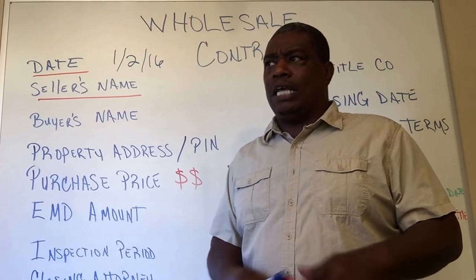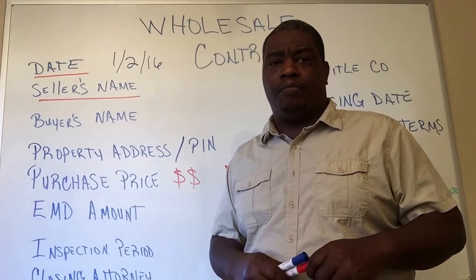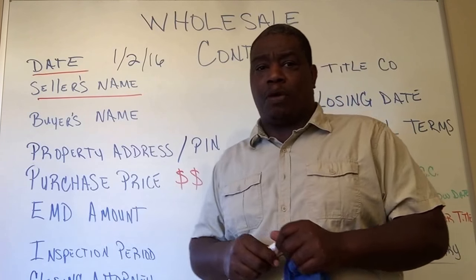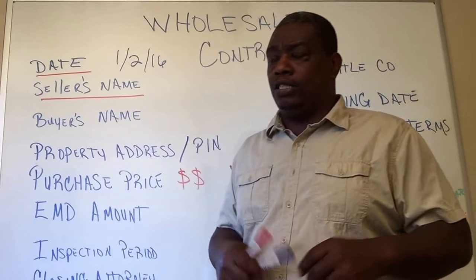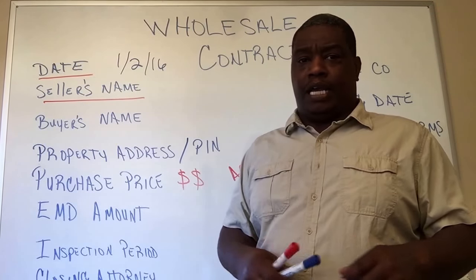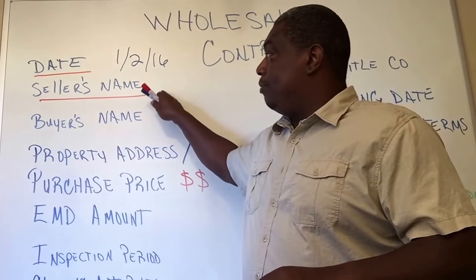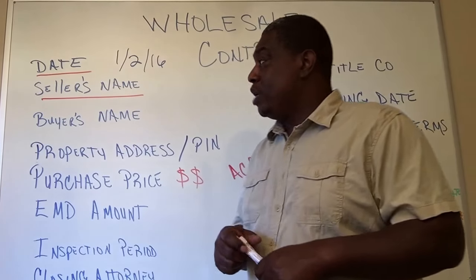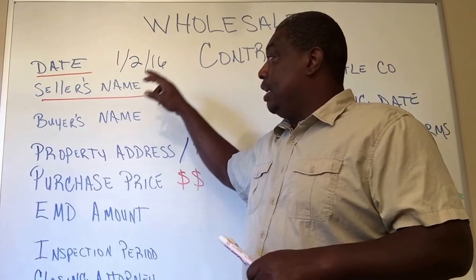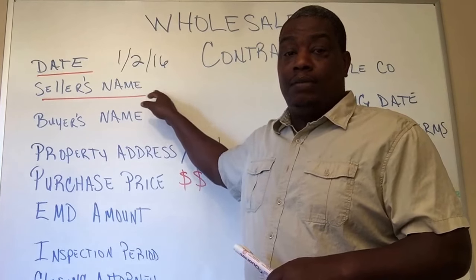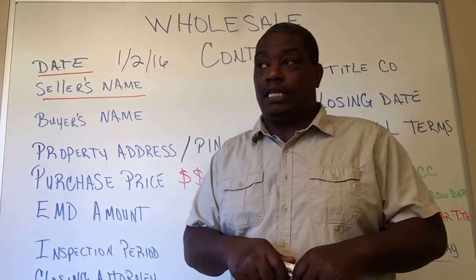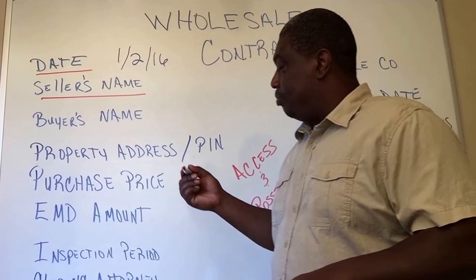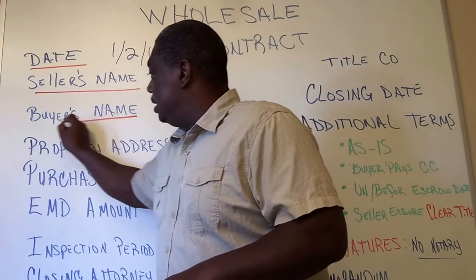For example, if you get a call from Joe Blow and he wants to sell his property, but the property on the tax record is in Joe Blow LLC, then the name on that contract needs to be Joe Blow LLC, not just Joe Blow. Remember, if it's an LLC, a trust, or anything like that, the name that needs to be on the contract is the name reflected in the assessor's records.